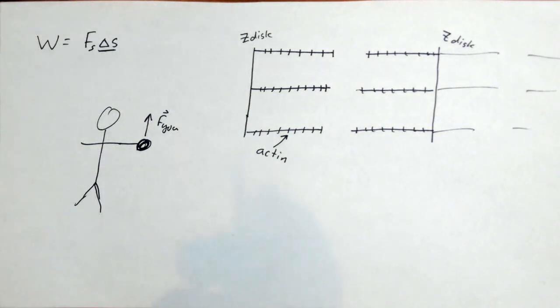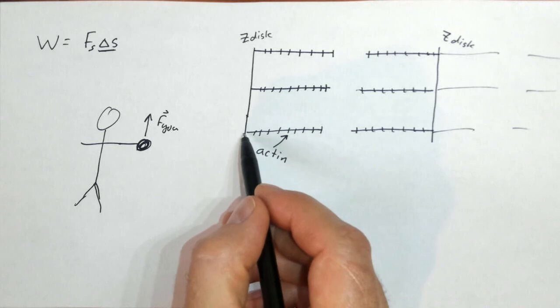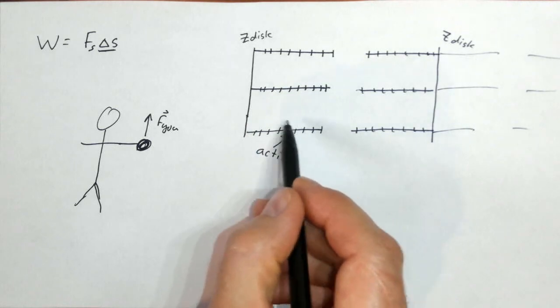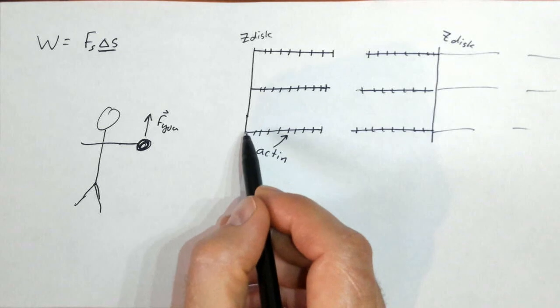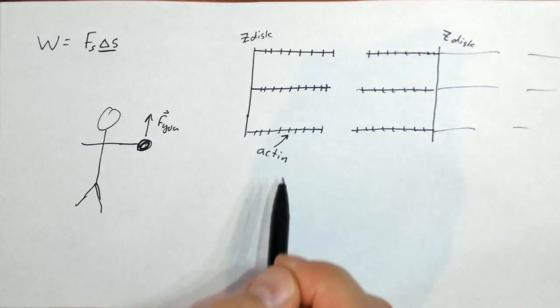And the thing interesting about actin is actin has an asymmetry, meaning if I look from here down this way, I see something different than if I look from here down this way. So it's got a pattern that is distinct. And so I know if I'm going left or right on this.